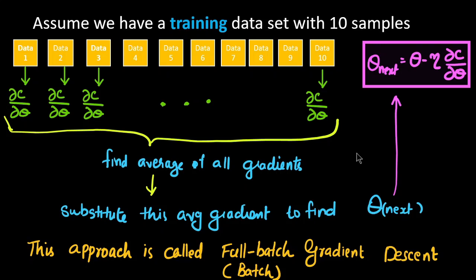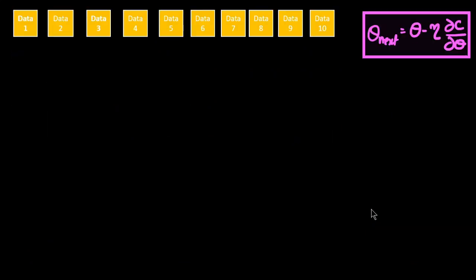We find the average of all those derivatives, then substitute that into the equation to update theta — that is full batch gradient descent. This means we have to remember all these derivatives: the derivative of the first sample, second, third, and so on. That's why it is called gradient descent with momentum.